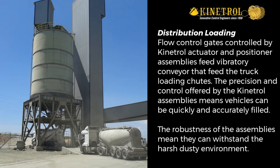Distribution loading: flow-controlled gates, controlled by Kinetrol actuator and positioner assemblies, feed the vibratory conveyor that feeds the truck loading chutes. The precision and control offered by the Kinetrol assemblies means vehicles can be quickly and accurately filled. The robustness of the assemblies means they can withstand the harsh, dusty environment.